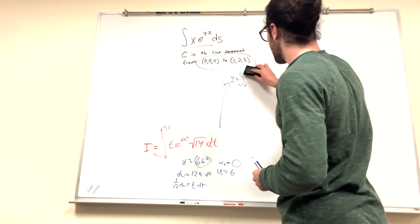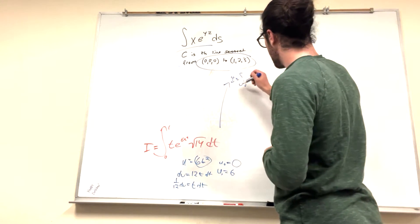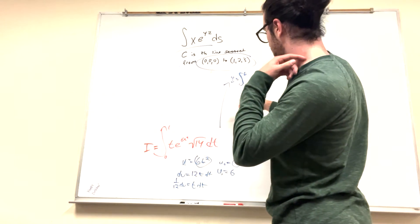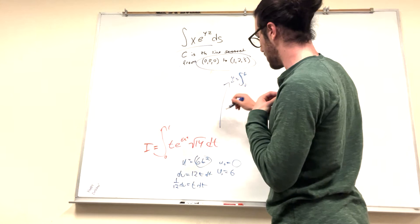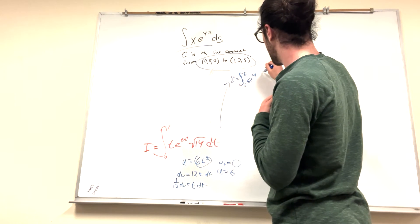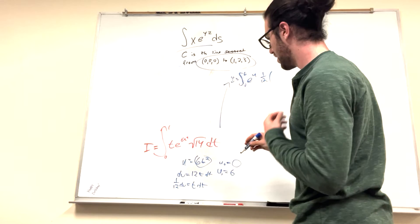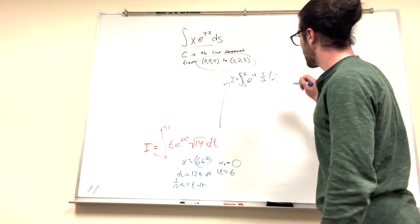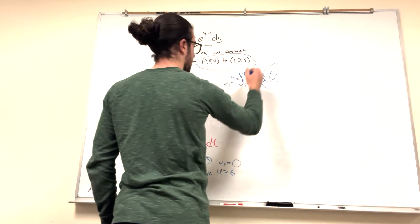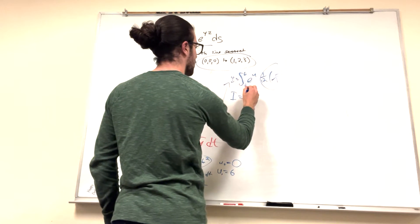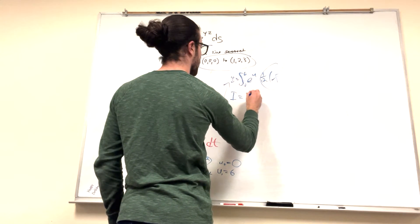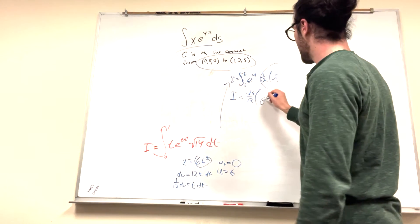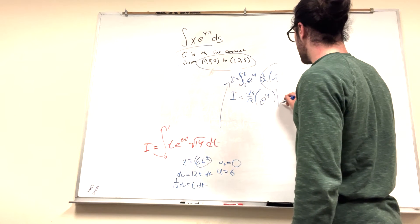It's not 0 to 1, it's 0 to 6. So this becomes du. So it's going to be e to the u, 1 over 12. And then we cannot forget, square root of 14, du. So we bring out our constant here. So it's going to be square root of 14 over 12. And then this integral, obviously, becomes e to the u again. From 0 to 6.